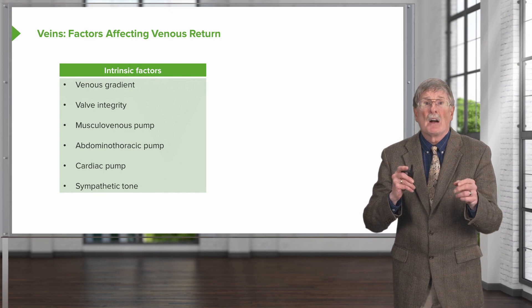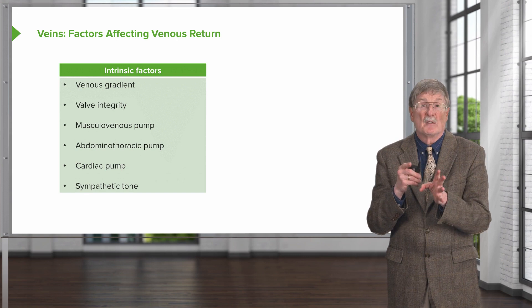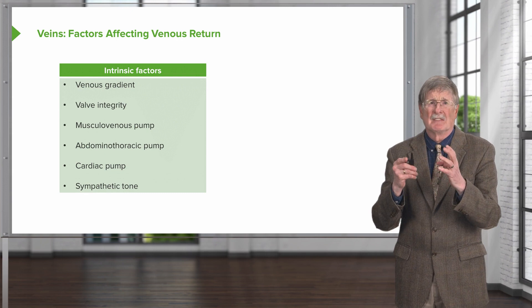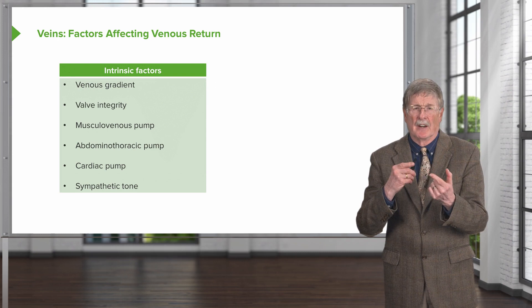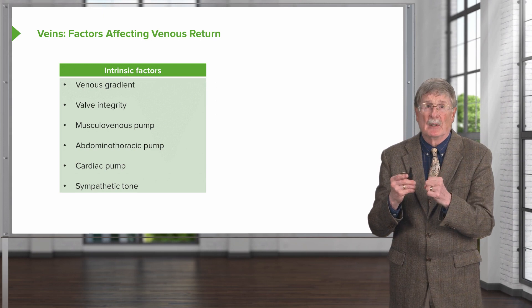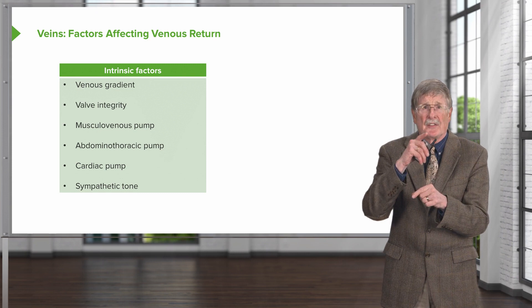Things that will affect venous return — the first topic we're going to talk about is varicose veins, relating to poor venous return of blood in relative stasis. If we're talking about getting blood back to the heart through the venous circulation, there's not a lot of pumping action happening at the level of the capillaries and into the veins, and there's relatively little pulsatile activity.